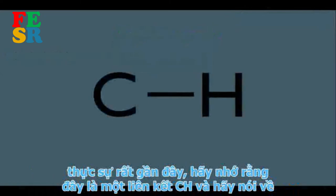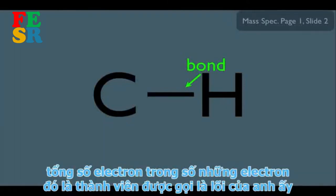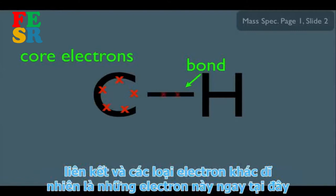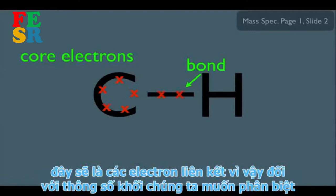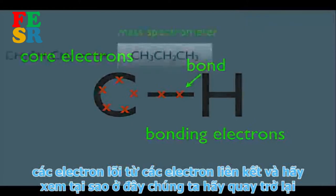Let's pay close attention here. Remember this is a C-H bond. Carbon has six electrons total — some are core electrons, which are not involved in bonding, and the others are bonding electrons. For mass spec purposes, we like to distinguish core electrons from bonding electrons.